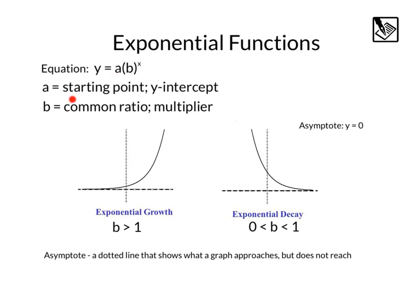The a is the starting point, or the y-intercept, and the b represents the common ratio, or the multiplier. When b is greater than 1, that means the multiplier is bigger than 1, so it's going to grow. Whenever you multiply a number by a number bigger than 1, it's going to get bigger and bigger.